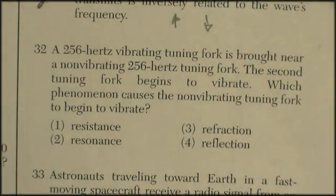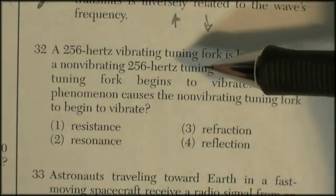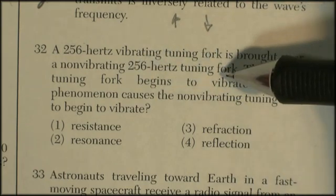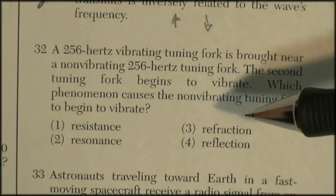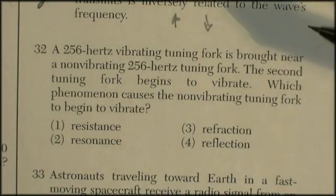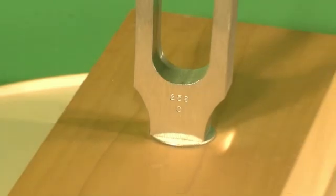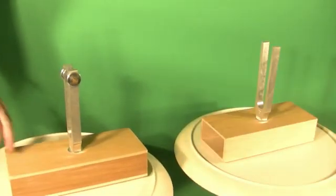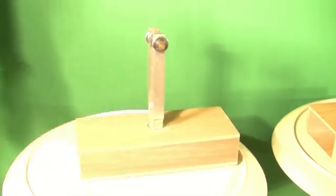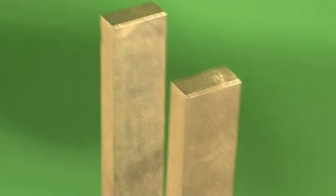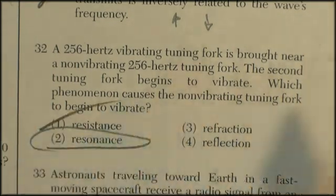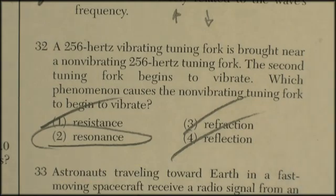Question 32: A 256 hertz vibrating tuning fork is brought near a non-vibrating 256 hertz tuning fork. The second tuning fork begins to vibrate. Which phenomena causes this? This is done with resonant boxes. You hit one tuning fork and it vibrates the tuning fork, but also the box and the air in it. That causes the air in the other box to resonate, which causes the box to resonate, which causes the tuning fork to resonate. If you listen carefully, you can actually hear it. I've said the word resonate a bunch of times, so let's assume this is a resonant phenomenon. The answer is resonance.